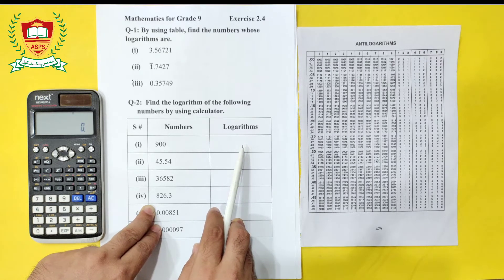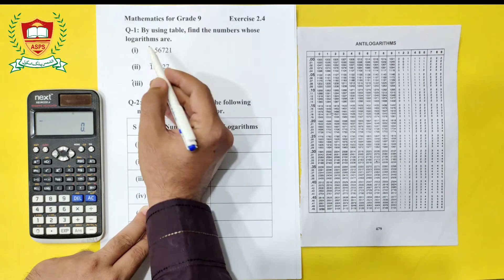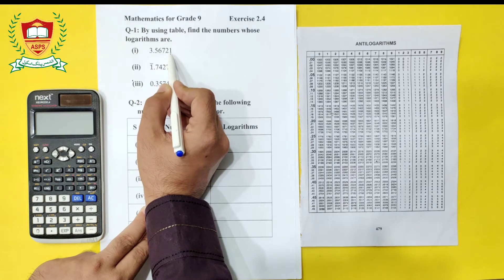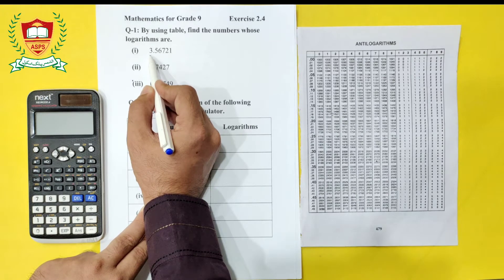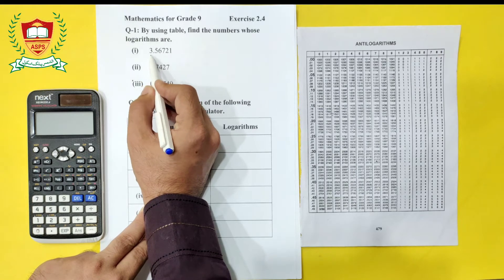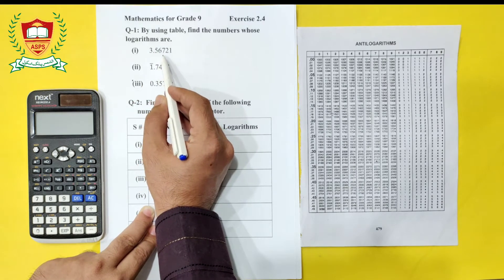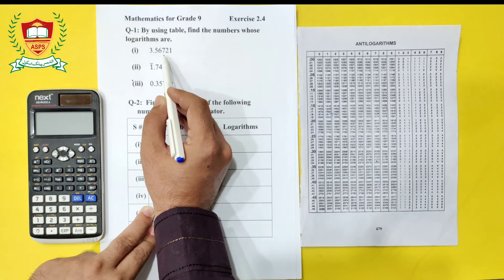The first value given is 3.56721. Here, 3 is the characteristic and 0.56721 is the mantissa. Since these are logarithms, the characteristic shows the movement of the decimal point. For now, we ignore the characteristic and work with the mantissa 0.56721 to find the anti-log.